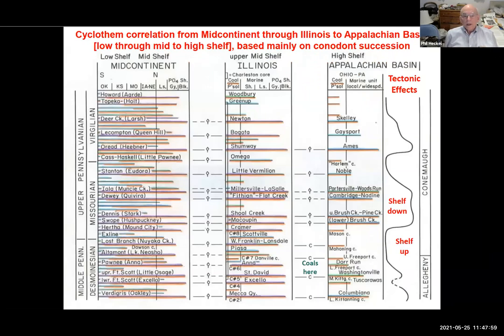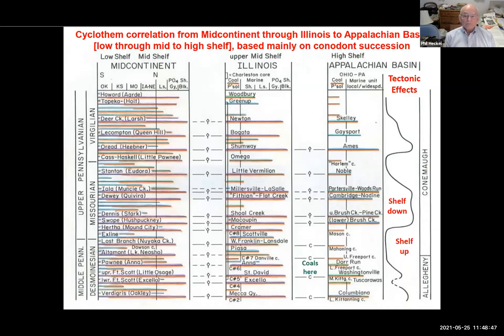More recently, I've been able to carry the cyclothem correlation through Illinois into the Appalachian Basin. Only the major cyclothems are maintained into the Appalachian Basin. I'm suggesting some possible tectonic effects there: in the middle Missourian, the four major cyclothems that Ron Martino talked about make it into the Appalachian Basin pretty well — possibly because the shelf was down tectonically or pyrogenically, based on orogenic movement to the east. But in the upper Missourian and particularly the lower Missourian and upper Desmoinesian, the major cyclothems do not make it very well into the Appalachian Basin, suggesting the shelf was tectonically up to some extent.